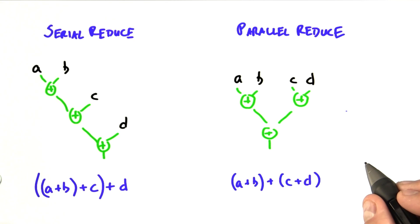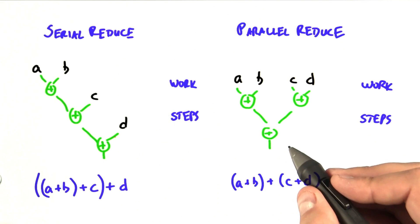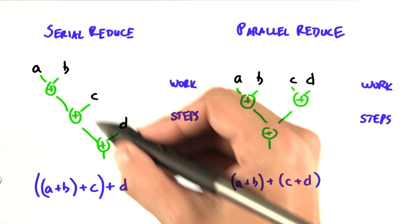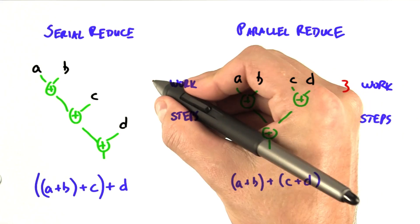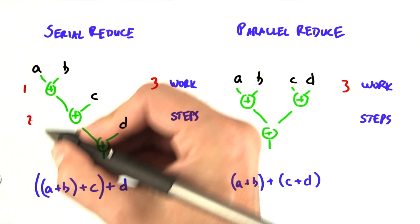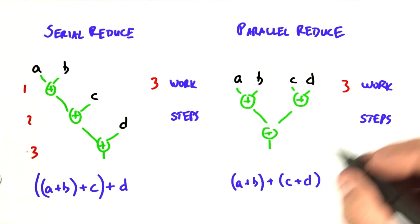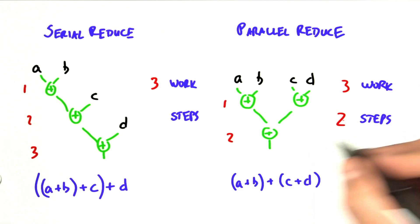Let's see how this works with our four-element reduction. Let's compare our serial reduction and our parallel reduction. Both of these have three additions. Both of them have three units of work. But whereas the serial reduction has one, two, three steps to complete, the parallel reduction only has one, two steps to complete.